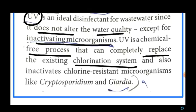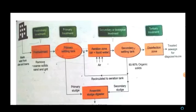Some microorganisms like Cryptosporidium and Giardia are resistant to chlorine, but even these can be easily killed using UV rays. Thus, the sewage water is treated before it is discharged into natural water bodies or reused and recycled.